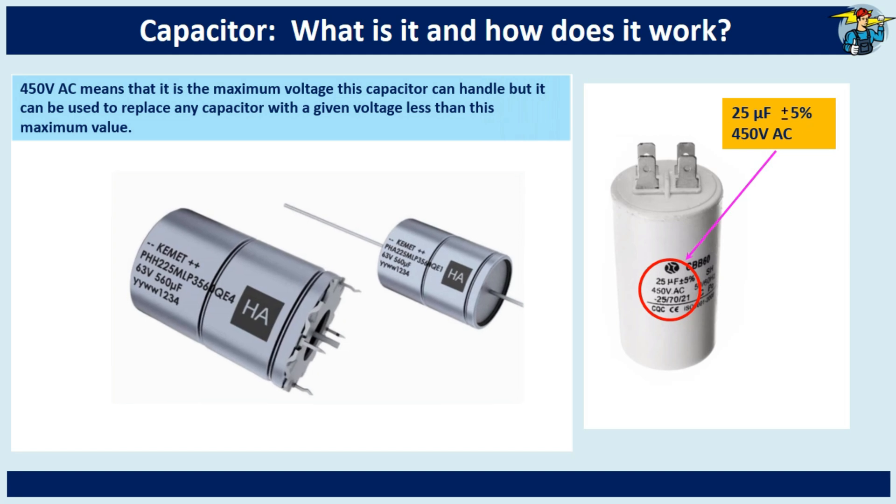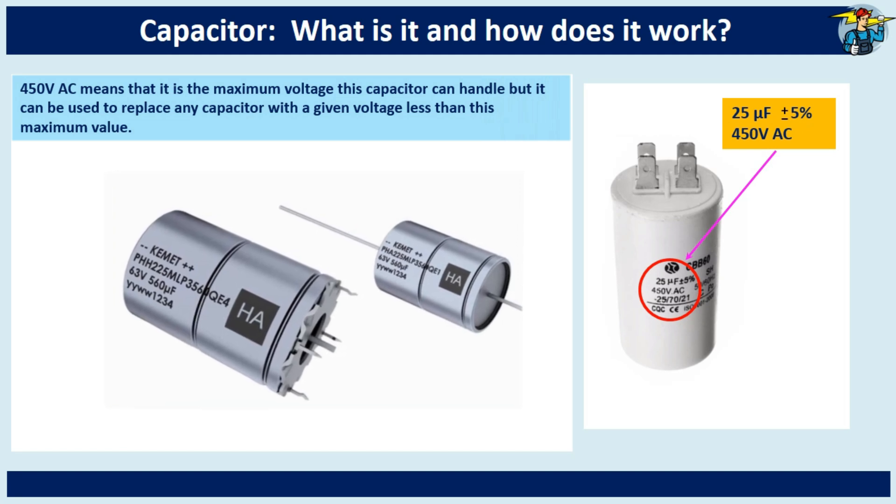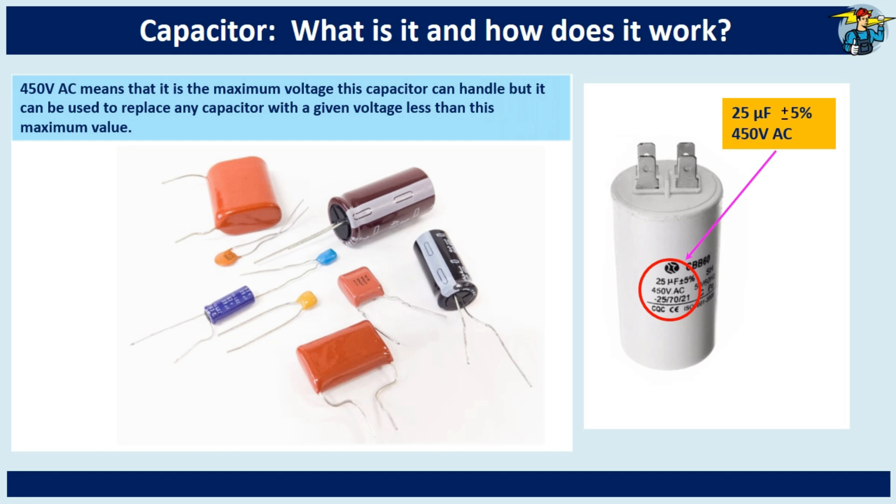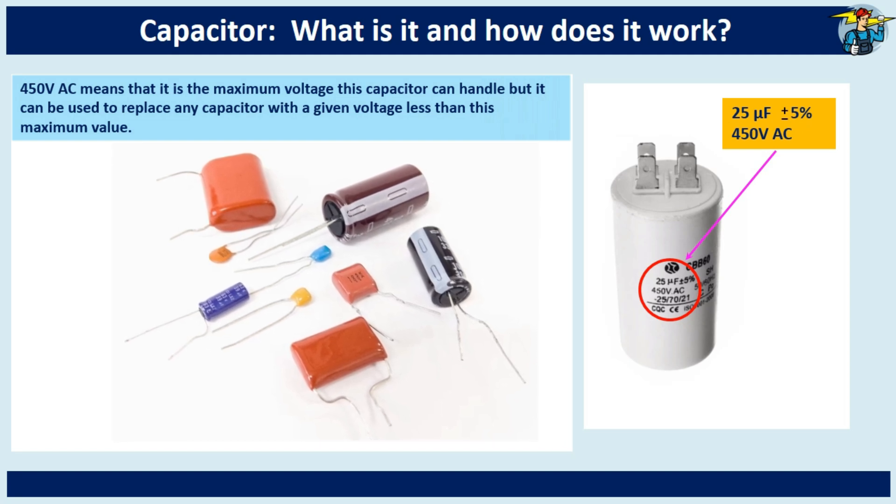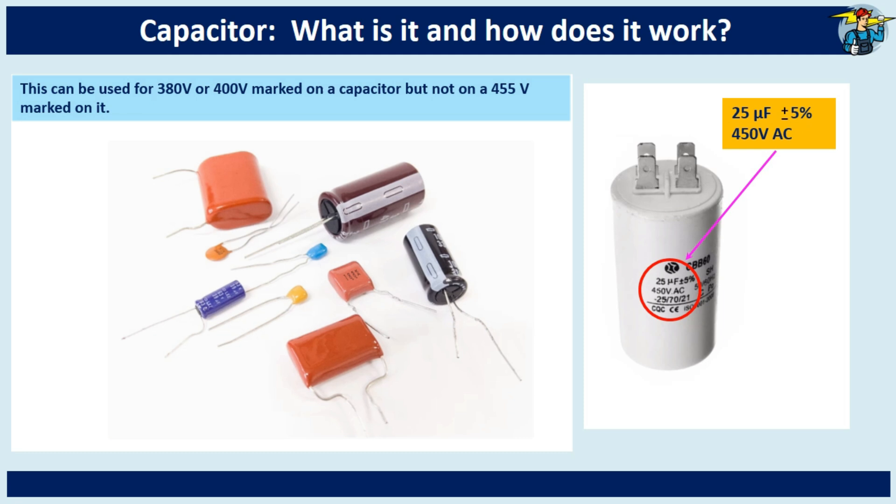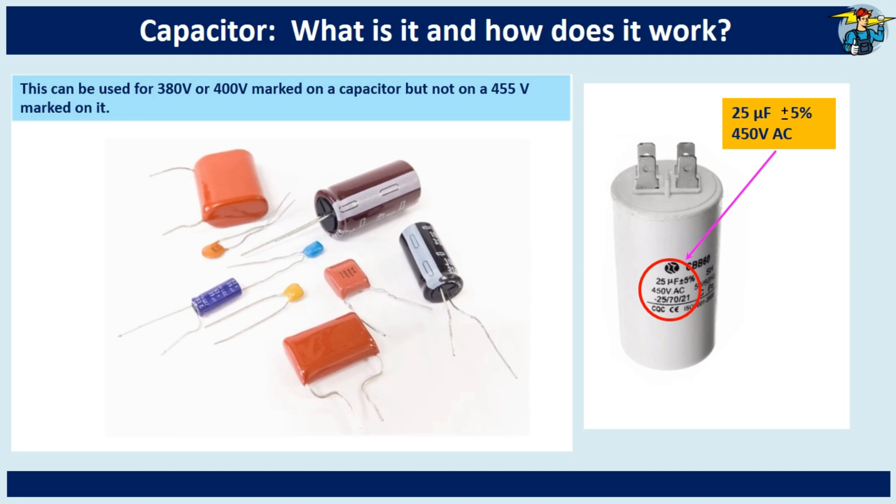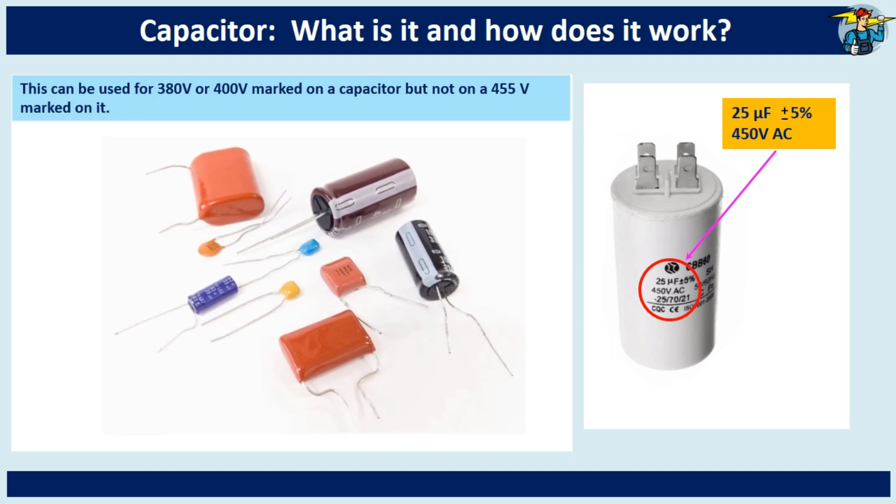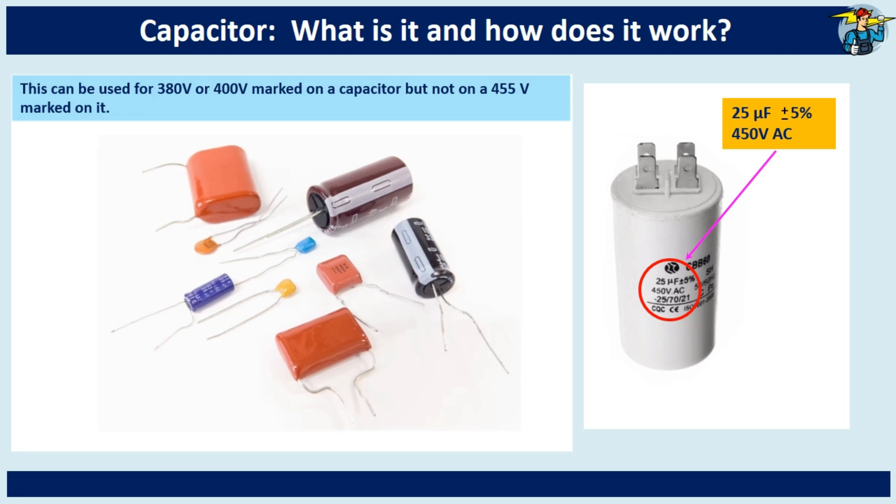450 volts AC means that it is the maximum voltage this capacitor can handle, but it can be used to replace any capacitor with a voltage less than this maximum value. That means it can be used to replace a 380 volts or 400 volts capacitor but not a 455 volts capacitor.